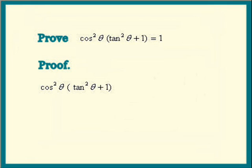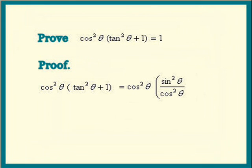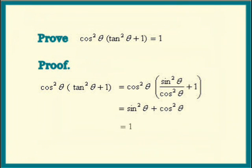Cosine squared theta times tan squared theta plus 1 equals cosine squared theta — nothing to do, so just copy it down. But tan squared theta can be changed into sines and cosines. We get sine squared theta over cosine squared theta, plus that 1. Next, distribute the cosine squared theta into the factor. We have the cosine squared thetas canceling in the first term. We have sine squared theta plus cosine squared theta times 1, which gives us cosine squared theta. And there's our trig identity — that equals 1, which is exactly what we want. Therefore, cosine squared theta times tan squared theta plus 1 is equal to 1.